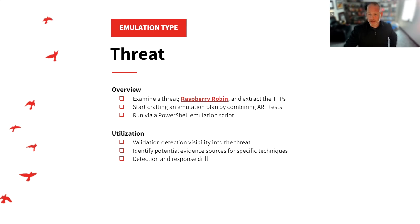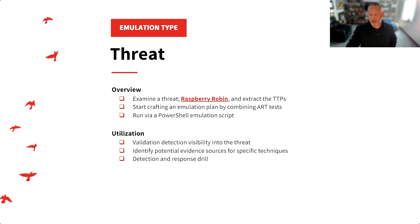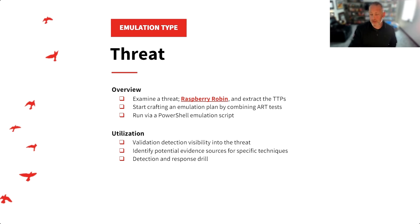From a threat perspective, taking Raspberry Robin, extracting those TTPs, and then putting together an emulation plan that incorporates these tests — this is a very simple text document run by PowerShell. Don't think it has to be several hundred lines of code; it's fairly straightforward. Extract the TTPs, place them in a sequence, and fire them off running PowerShell. Another thing is looking for potential evidence sources for specific techniques. If you're concerned about Raspberry Robin, what does it look like from an execution perspective? Does it make registry modifications? Does it use WMI event consumers? We can put these into that detection and response drill.